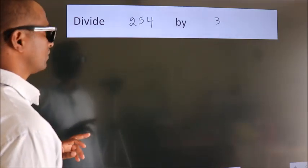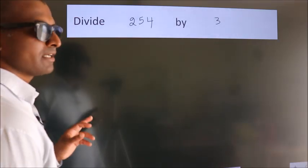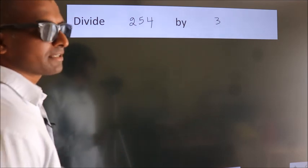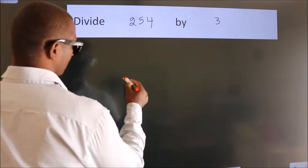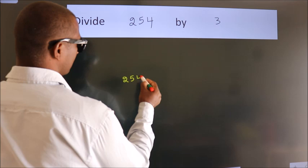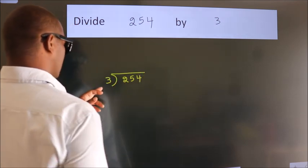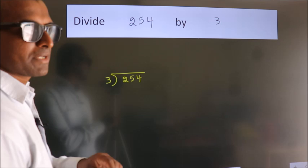Divide 254 by 3. To do this division, we should frame it in this way. 254 here, 3 here. This is your step 1.